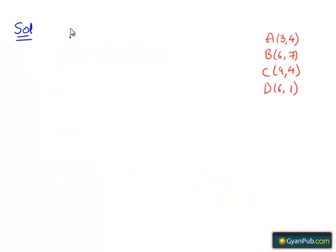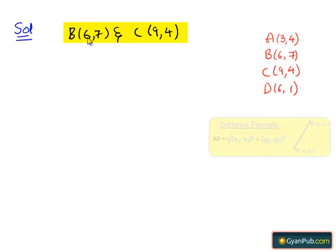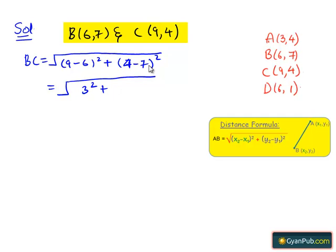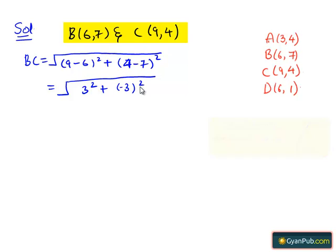Taking the second pair of points B(6, 7) and C(9, 4), by the distance formula we get BC = √((9−6)² + (4−7)²) = √(3² + (−3)²) = √(9 + 9) = √18 = 3√2.